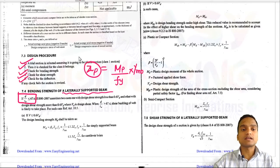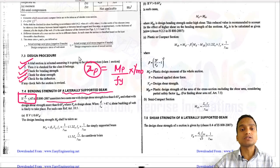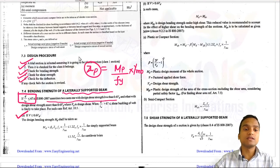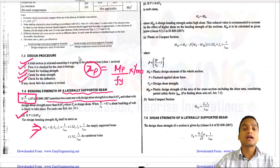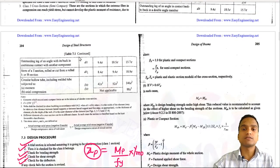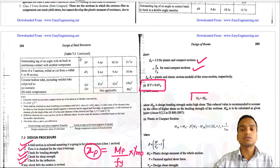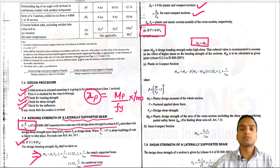When d/tw is less than 67 epsilon, shear buckling does not occur in the web. IS 800:2007 considers two cases — low shear and high shear. When V is less than 0.6 times VD, it is a low shear case and MD can be calculated directly. The beta_b value is 1.2 for simply supported beams and 1.5 for cantilever beams. When V is greater than 0.6 times VD, it is a high shear case and MD equals MDV.